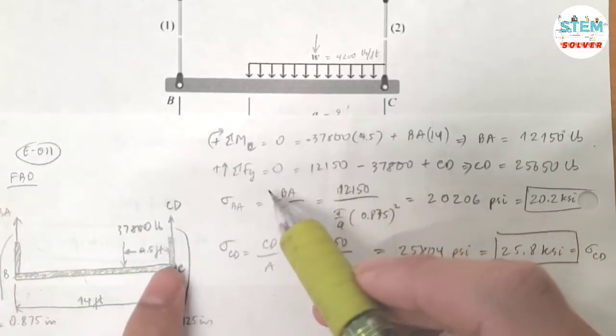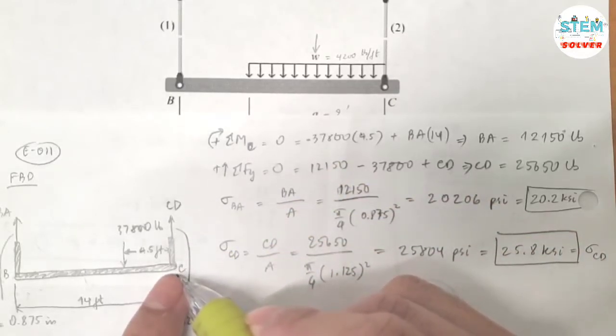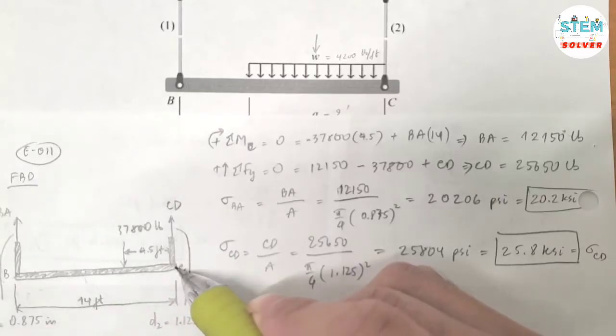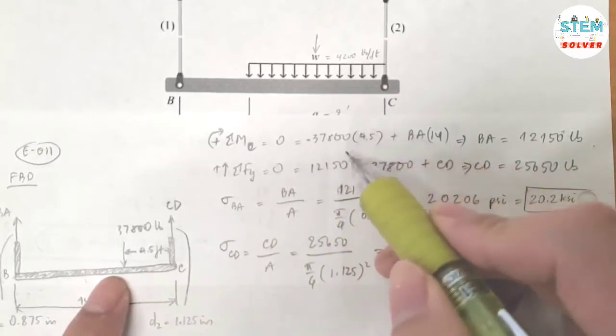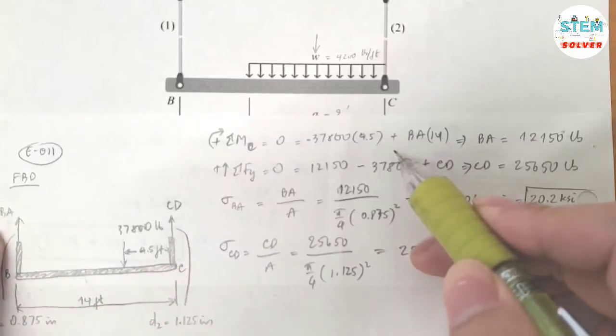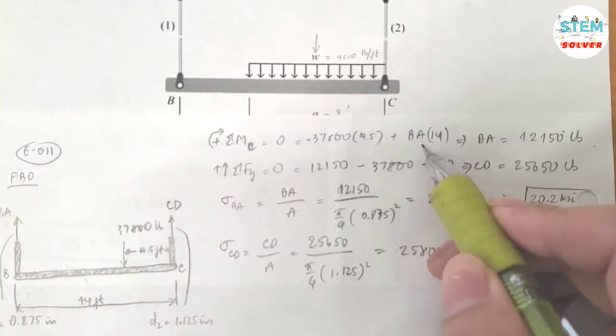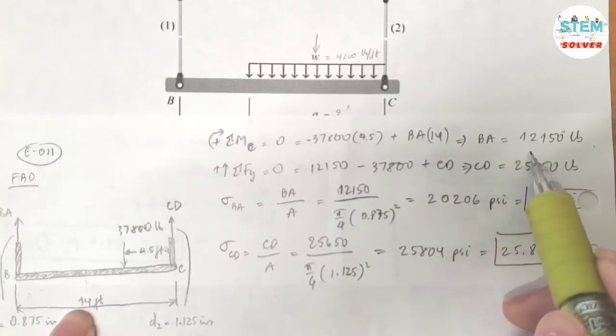So let me take the moment about point C. Suppose clockwise direction is a positive direction. So summation of the moment about point C equals 0. That gives me, because this force is down, negative 37,800 times 4.5 feet, plus this force is clockwise direction, so positive BA times the distance 14 feet. Then solve for the unknown. I got BA equals 12,150 pounds.